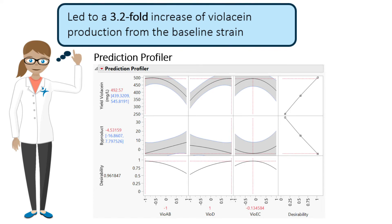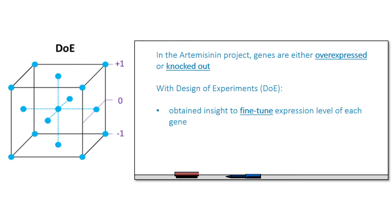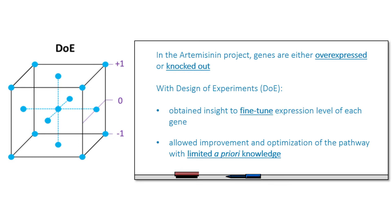Through these steps, the authors were able to increase metabolic production of violacein by a 3.2-fold increase from the baseline strain. In contrast to the work of artemisinin production, where genes are either overexpressed or knocked out, this case study shows how DOE provided insight to fine-tune the expression level of each component in the pathway. This is important as simply overexpressing all the enzymes involved may cause burden and metabolic stress to cells, which is detrimental for cell growth and overall product titer. Furthermore, DOE allowed improvement and optimization of the pathway with limited a priori knowledge.